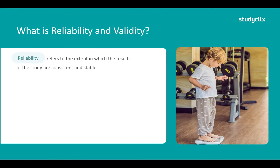Reliability refers to the extent to which the results of a study are consistent and stable. If we were to replicate this study, will we get similar findings? For example, do you get a similar number every time you stand on a scale? If you stand on your bathroom scales and it says you're 60 kilos, then 45, then 50 — we're getting quite different results with no consistency. So reliability would be very low.